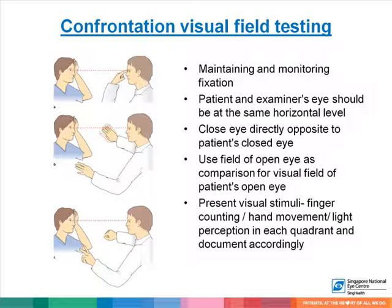Confrontation visual field testing is useful in the clinic. When performing this testing, it is important to maintain and monitor the patient's fixation. The patient and the examiner's eye should be at the same horizontal level. The patient is asked to close one eye and the examiner closes the eye directly opposite to the patient's closed eye. The field of the examiner's open eye is then used as a comparison for the patient's open eye, by presenting a visual stimulus — which could be finger counting, hand movement, or light perception — in each quadrant.